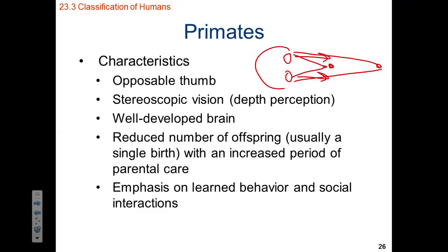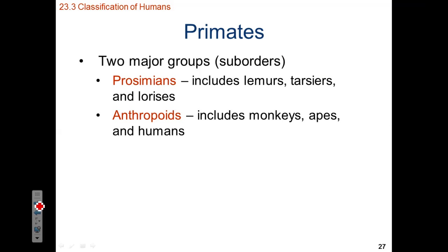We also typically have an emphasis on learned or social behavior as primates. Within the group of primates, there are two sub-orders: prosimians and anthropoids. Prosimians are going to be less like us as human beings — they include lemurs, tarsiers, and lorises. We're going to focus more on the anthropoids, which includes us as human beings.